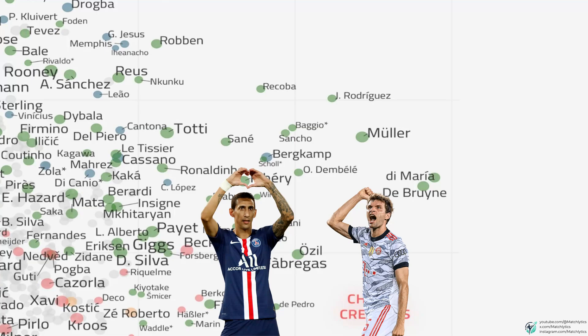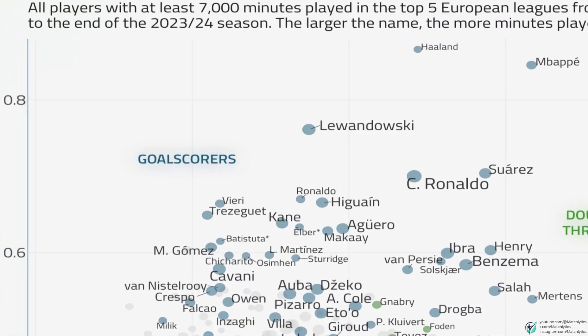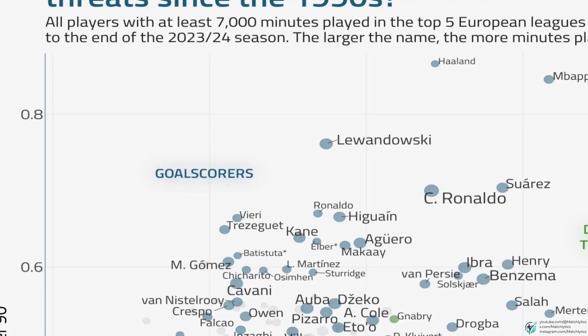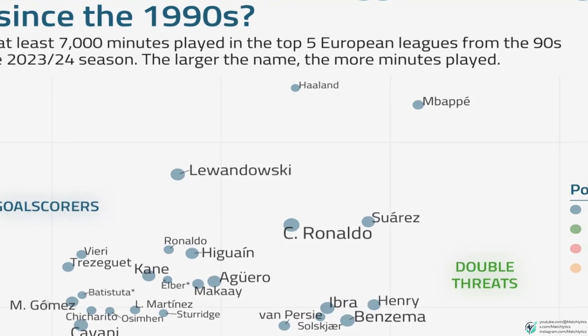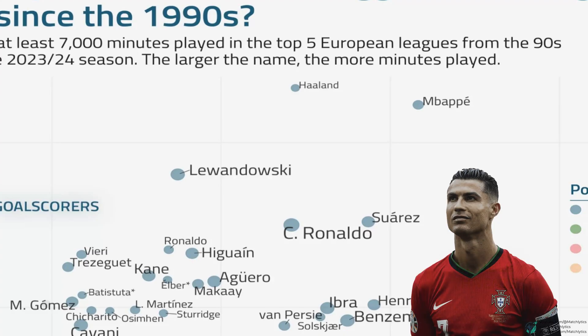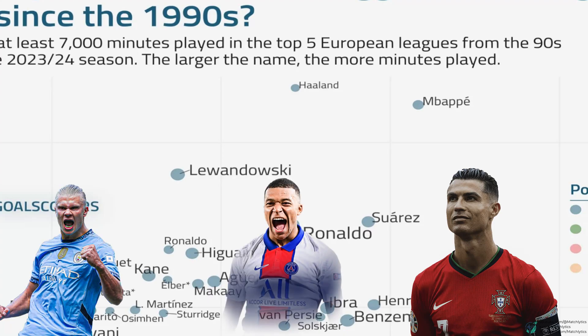Muller is higher up the y-axis, as he also has an incredible eye for goal. Now let's look at the goal scorers in the top left. Players like Higuain, Aguero, and Lewandowski are here, with 0.6 to 0.8 non-penalty goals per 90, but only 0.1 to 0.2 assists. These guys are known for primarily scoring goals and don't rack up many assists. Moving across the x-axis, we find Ronaldo. His dot is huge — he's played a ton of minutes, with 0.7-plus goals per game showing why he's a scoring machine. Haaland and Mbappe are also up here with over 0.8 goals per 90, but their dots are small, meaning they haven't played as many minutes. It becomes harder to maintain a high goal-to-minute ratio the more minutes one plays.